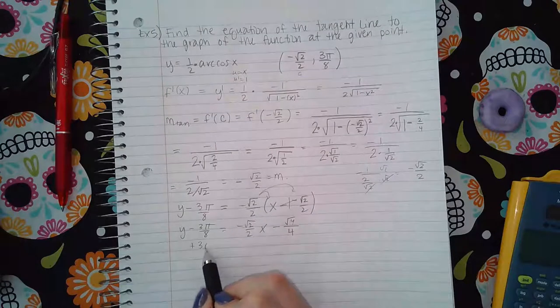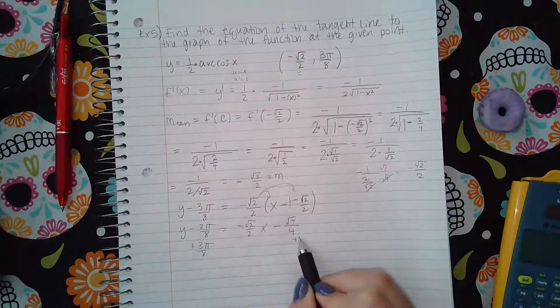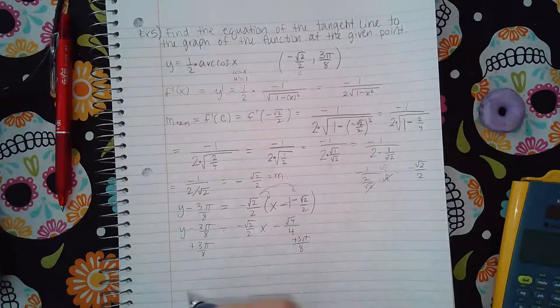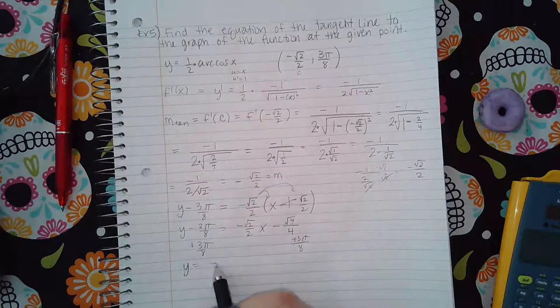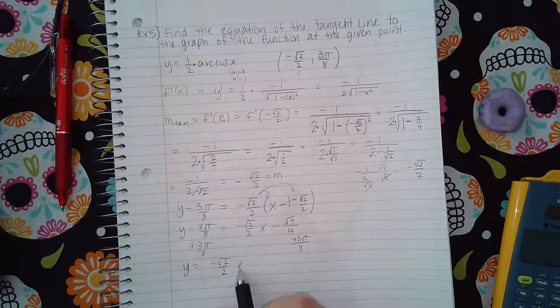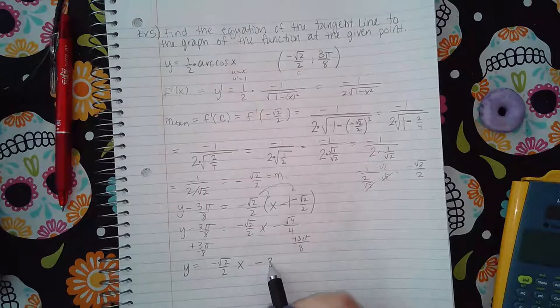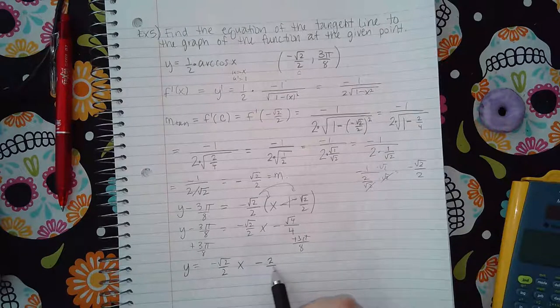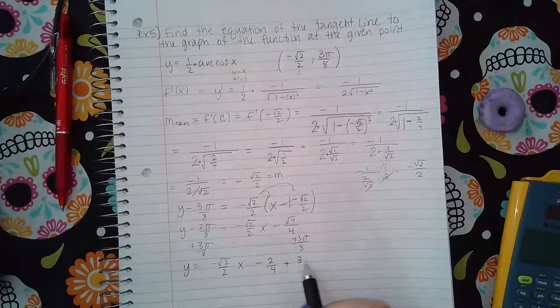And then negative times a positive will be negative square root of two times square root of two is square root of four, and then two times two is four. And I'm going to add three pi over eight to both sides so that I can get y by itself.